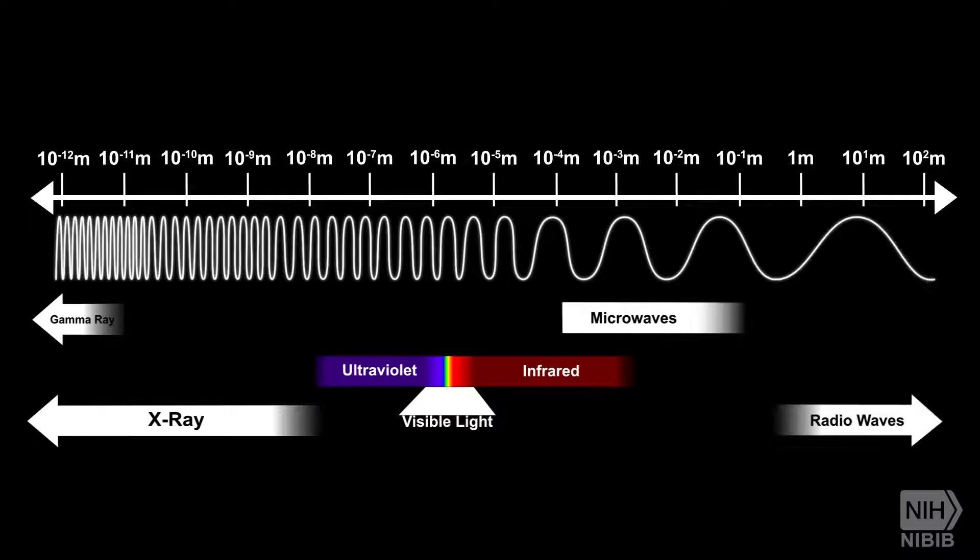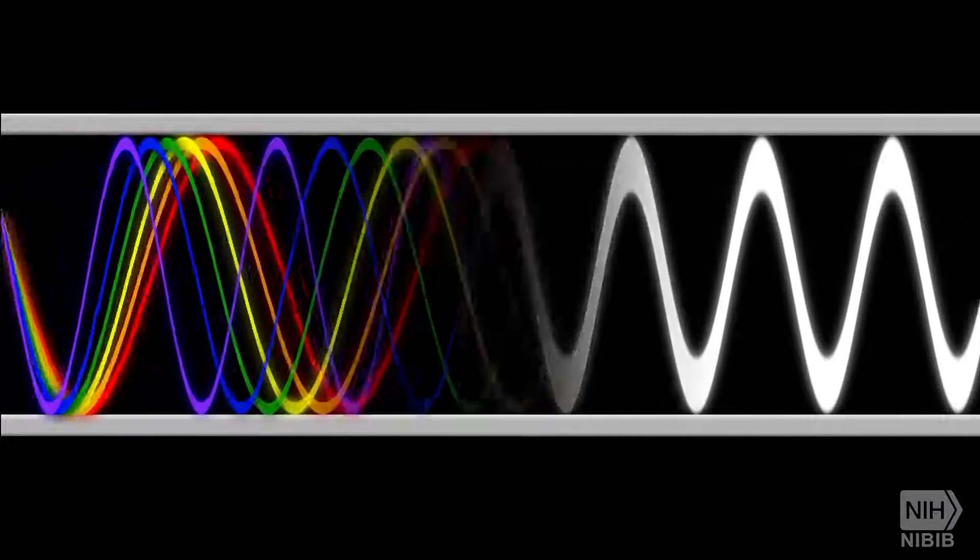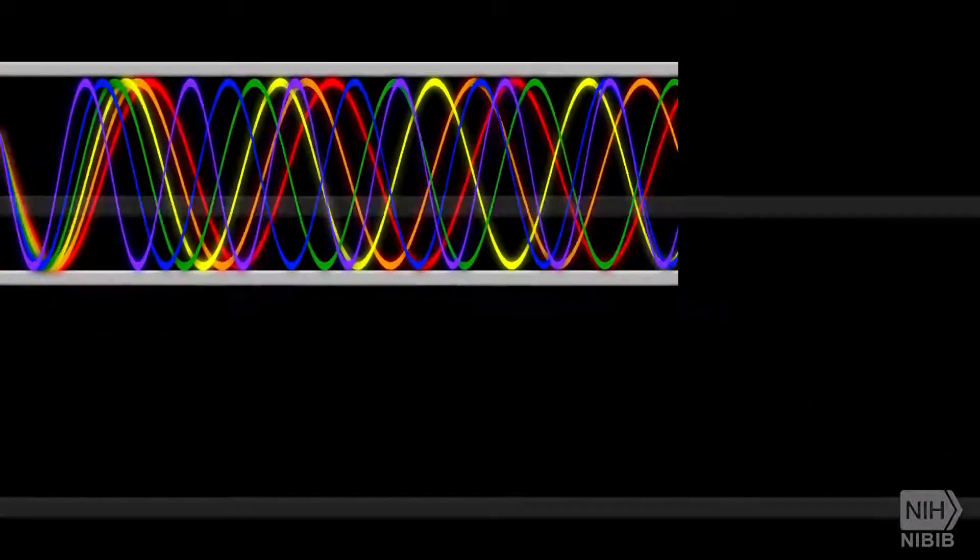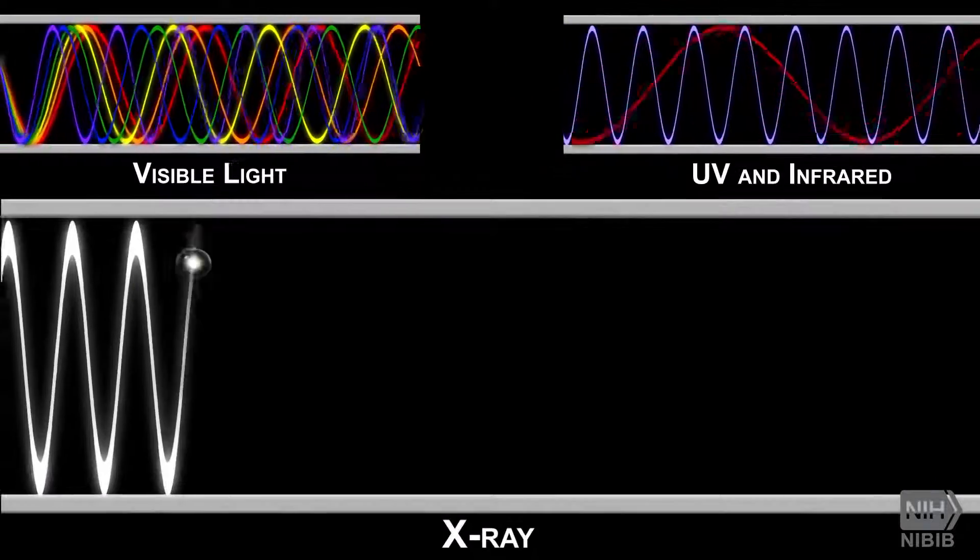Light is a form of electromagnetic radiation. At some wavelengths, it appears as visible light. At others, it takes the form of radiation we cannot see, such as ultraviolet, infrared, and x-rays.